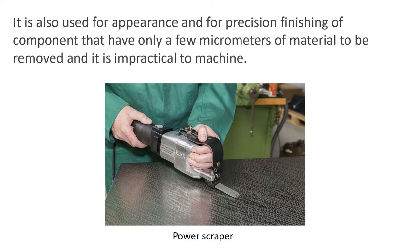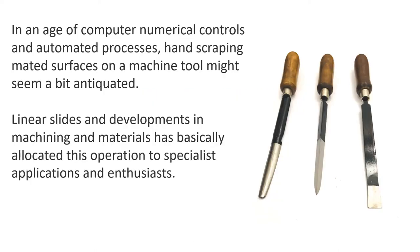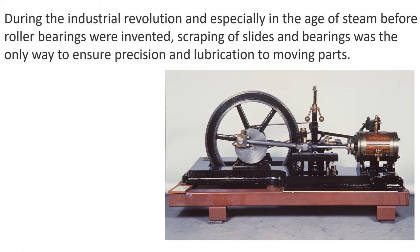Pictured is a power-driven scraper fitted with a replaceable carbide tip. In the age of high-tech equipment and CNC machinery, hand scraping of mating surfaces might seem a little antiquated. Advances in materials and the use of linear bearings has assigned scraping to specialist and enthusiast applications. During the industrial revolution and the age of steam, before roller bearings were used in larger machine tools, scraping of slides and bearings was the only way to ensure precision and lubrication to moving parts.